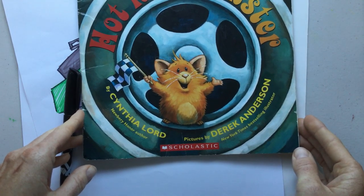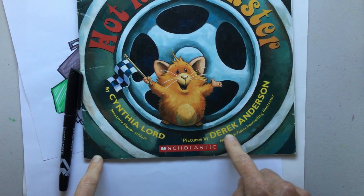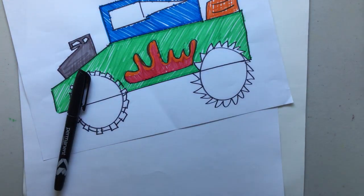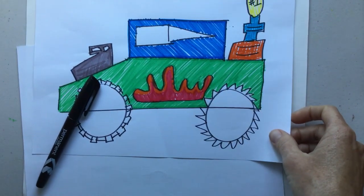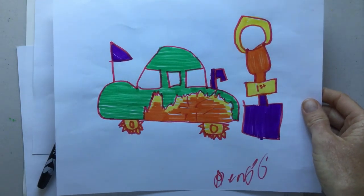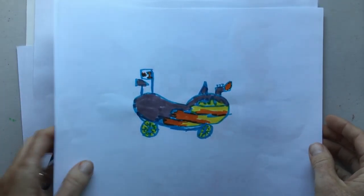This book is by Cynthia Lord, and the pictures or the illustrator is Derek Anderson. All right, and here's just an example. This was my hot rod that I drew by the end of the book. Let's see, I have a couple more examples here. My sons did one with me while we were drawing and reading the book.